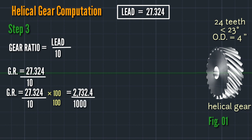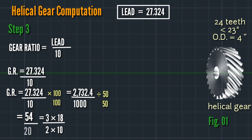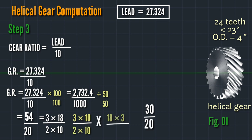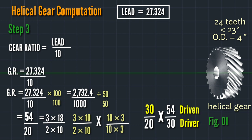Proceeding to gear arrangement and finding the number of teeth. The gear values are: 50 and 54. Checking: 3 times 18 equals 54, and 2 times 10 equals 20. Finding available gears: 3 times 10 equals 30, 2 times 10 equals 20, 18 times 3 equals 54. So 30 is the gear on the worm (driving) and 20 is the gear on the leadscrew (driving).